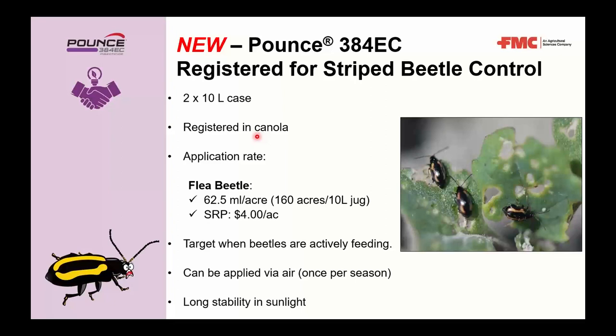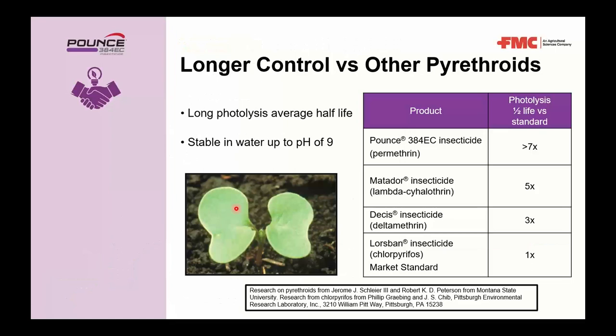Pounce comes in a two-by-10-liter case, registered in canola for flea beetles and cutworms. The rate is 62.5 mils per acre, covering 160 acres per 10-liter jug, at approximately $4 per acre. Best results target flea beetles when they are actively feeding. It can be applied by air once per season and has a unique characteristic of longer stability in sunlight.